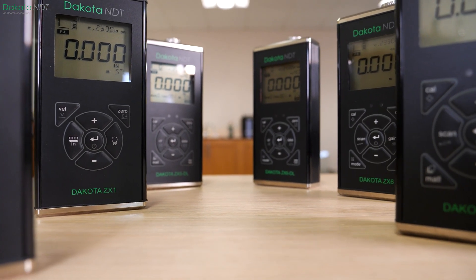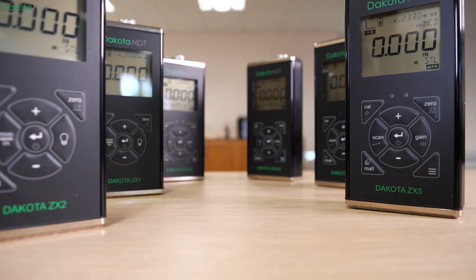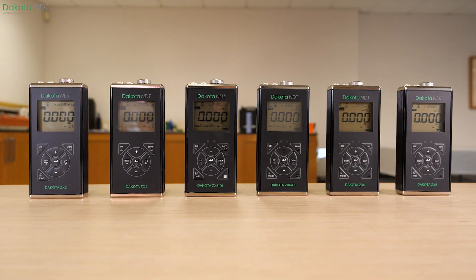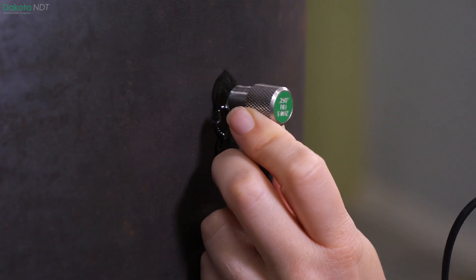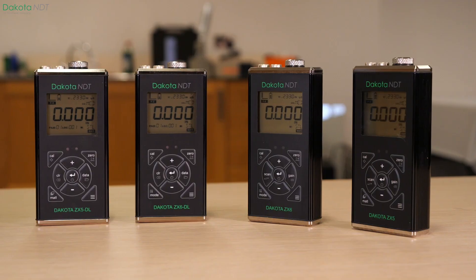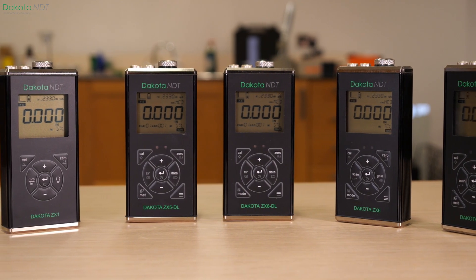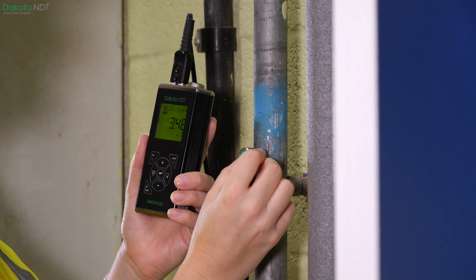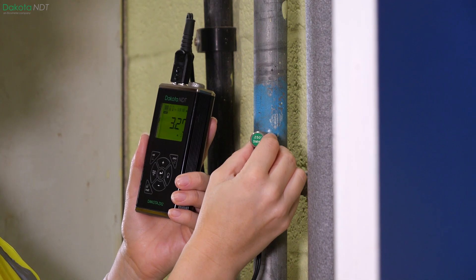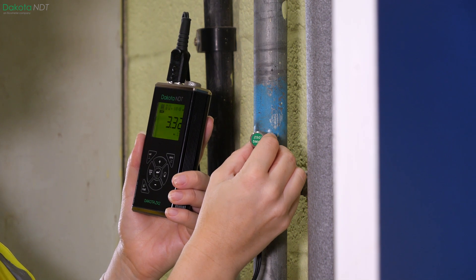Introducing Dakota's largest range of thickness gauges, the ZX range. Empower your corrosion prevention strategy with reliable and easy to use NDT gauges, ensuring precision and reliability for comprehensive corrosion monitoring.